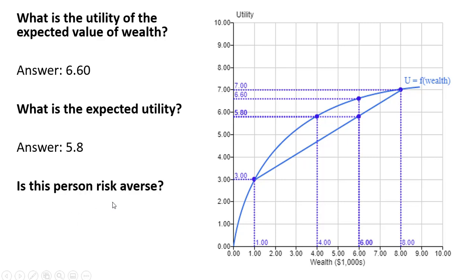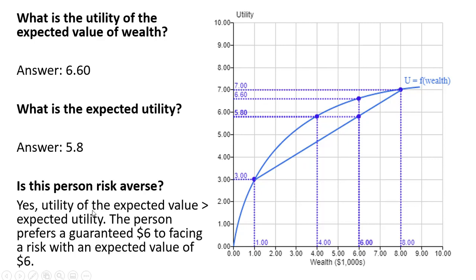Is this person risk-averse? Yes. The utility of the expected value, 6.6, exceeds the expected utility of 5.8. The person prefers a guaranteed $6 to facing a risk with an expected value of $6.